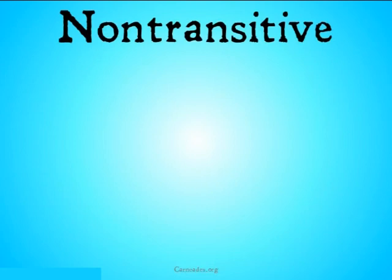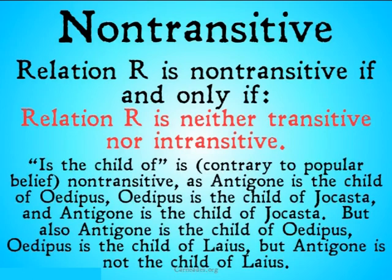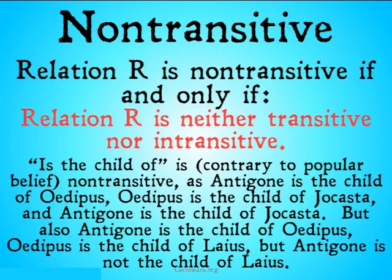Non-transitive: relation R is non-transitive if and only if relation R is neither transitive nor intransitive. 'Is the child of,' contrary to popular belief, is going to be non-transitive. Look at Oedipus — Antigone is the child of Oedipus, Oedipus is the child of Jocasta, and Antigone is also the child of Jocasta, because Oedipus married his mother and had children. However, Antigone is the child of Oedipus, Oedipus is the child of Laius, but Antigone is not the child of Laius. So this is a non-transitive relation, because it could either be transitive or not, depending on how we limit our cases.